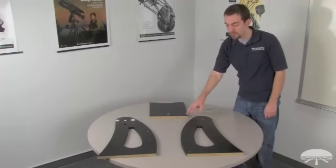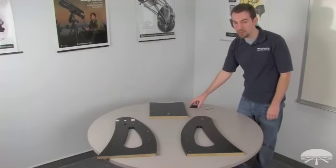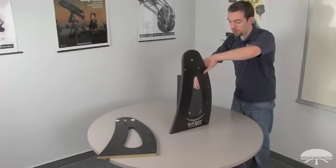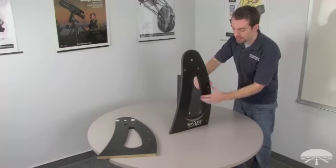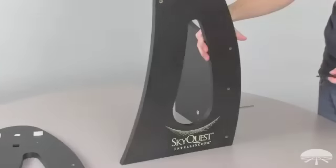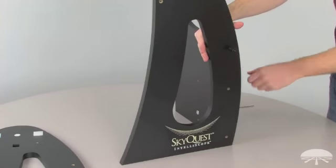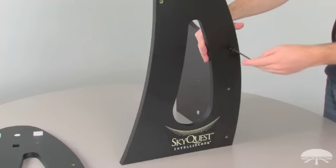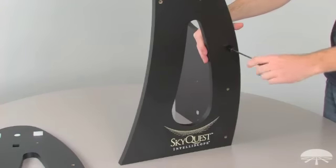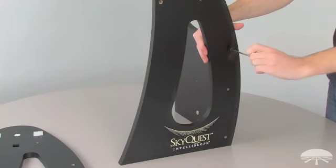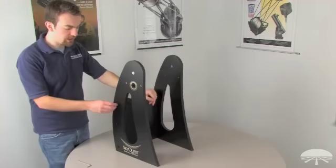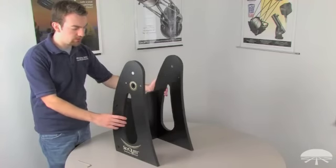Next, attach the front brace to the two side panels using six of the included base assembly screws and the included 4mm hex key. Orient the side panel such that the SkyQuest logo is facing outwards, and on the front brace that the threaded insert is facing inwards. Gently insert one of the assembly screws and hand-tighten it using the 4mm hex key. We don't want to make it too tight because we want these to all be loose until we attach it to the base plate. Repeat this for the next five. Once you've attached all the screws, it should be loosely attached looking somewhat similar to this.